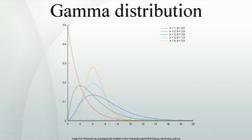There are three different parameterizations in common use: with a shape parameter k and a scale parameter theta; with a shape parameter alpha equals k and an inverse scale parameter b equals 1 over theta, called a rate parameter; with a shape parameter k and a mean parameter m equals k theta. In each of these three forms, both parameters are positive real numbers.